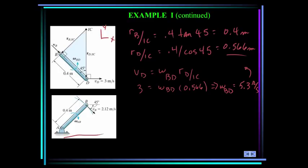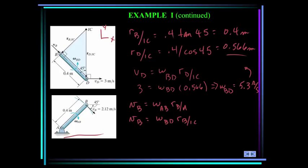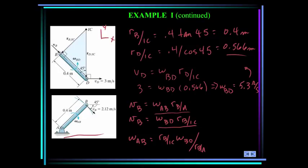Now let's consider link AB. AB is rotating about the fixed point A, so the velocity of B equals omega_AB times r_{B/A}. We also know that the velocity of B equals omega_BD times r_{B/IC}. Setting these equal and solving: omega_AB equals r_{B/IC} times omega_BD divided by r_{B/A}, which equals 0.4 times 5.3 divided by 0.4. So omega_AB equals 5.3 radians per second, clockwise.